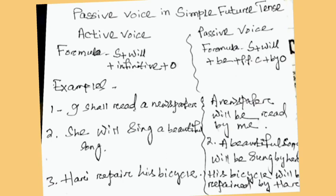From active voice to passive voice, in case of simple future, the active formula is: Subject + will + infinitive + object. In case of the passive formula: Subject + will + be + past participle of verb + by + object.